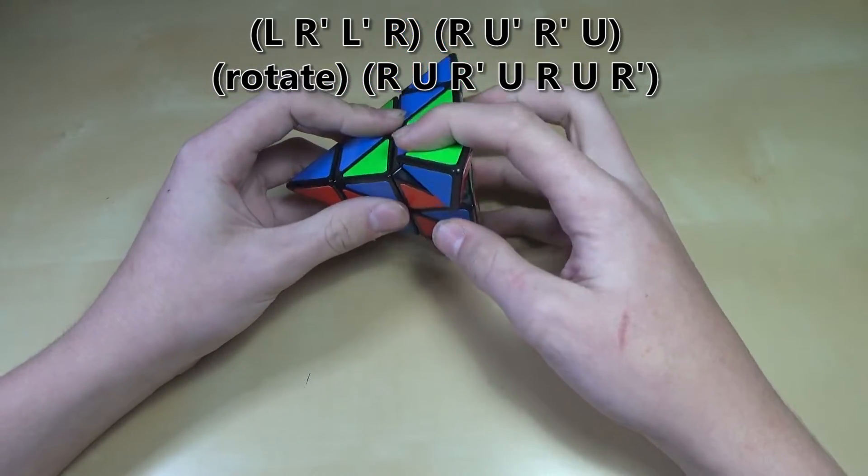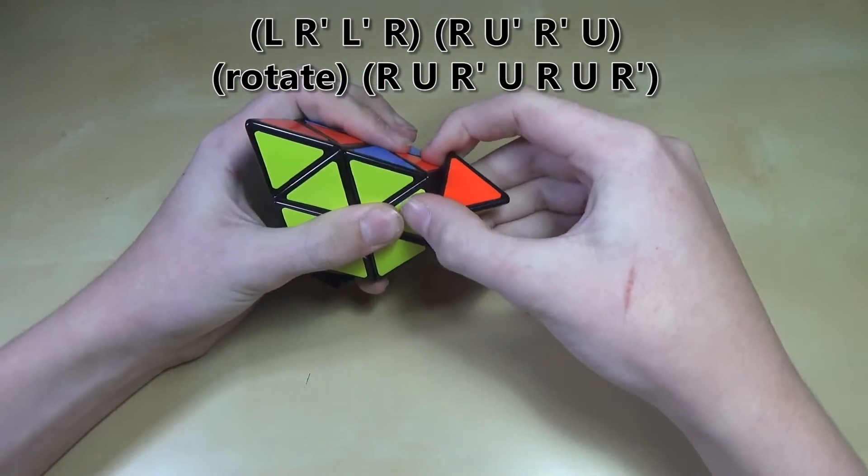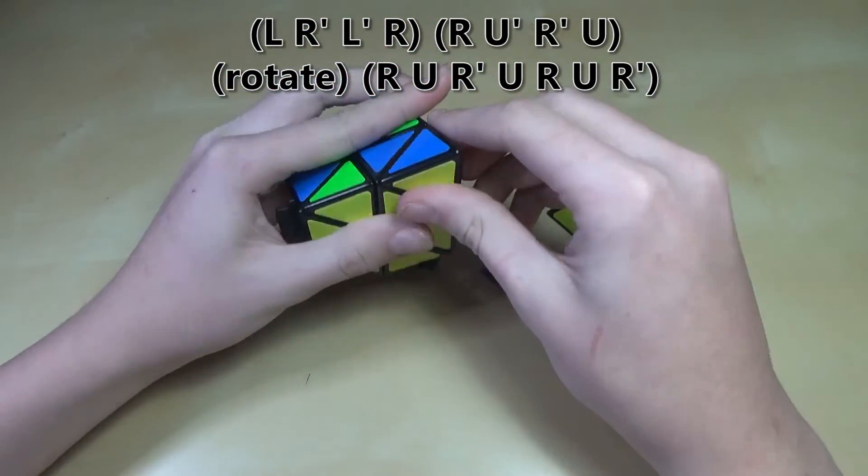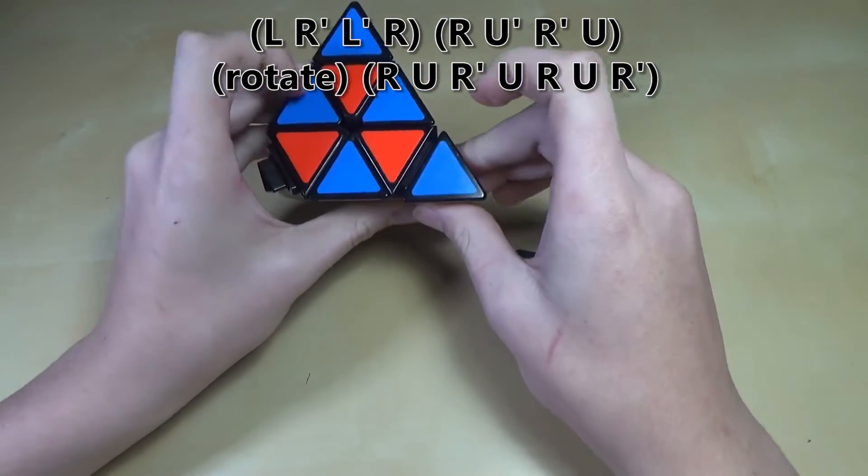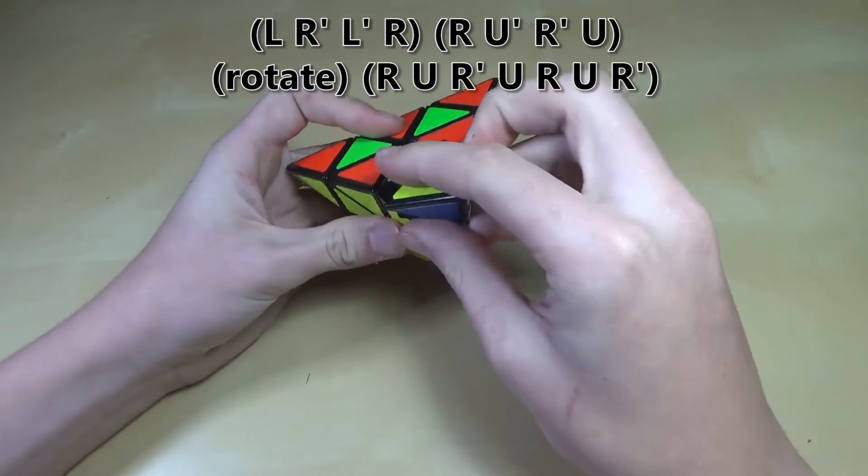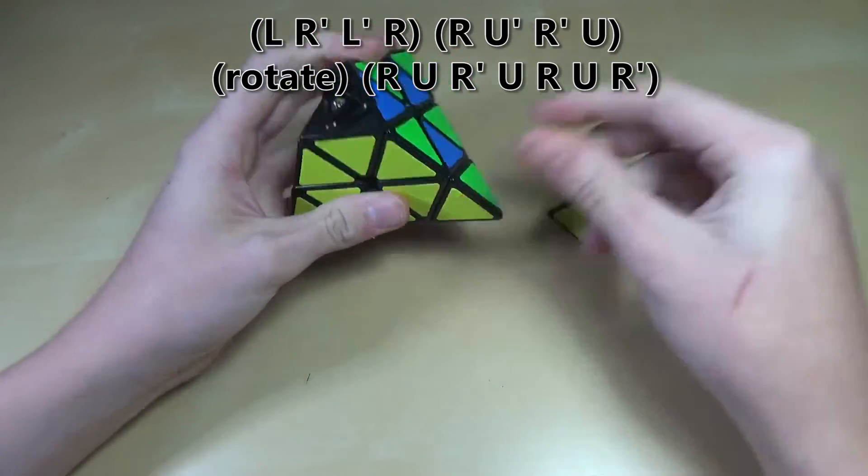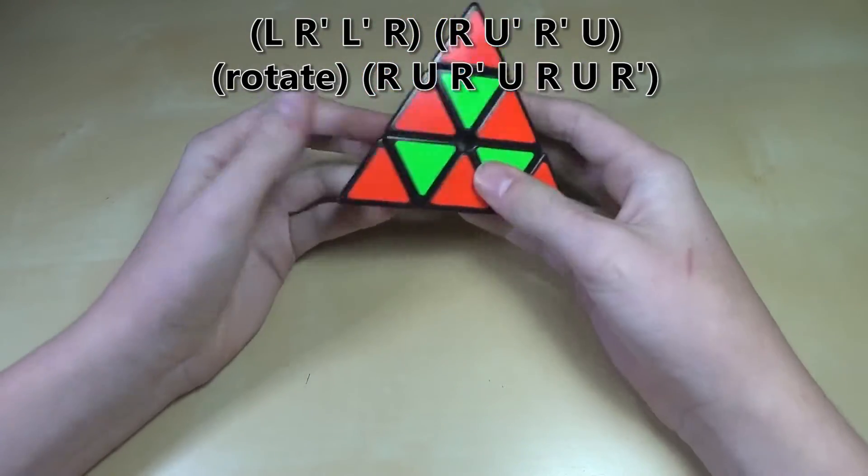And then from here you can just move this tip to line up with the colors and then take these three bottom tips off. You can just rotate them 60 degrees like this and pop them off, and then figure out where they would line up to make the colors look normal. In this case it would be like this, and then like this, and like this. And there we go, we got our pattern complete.